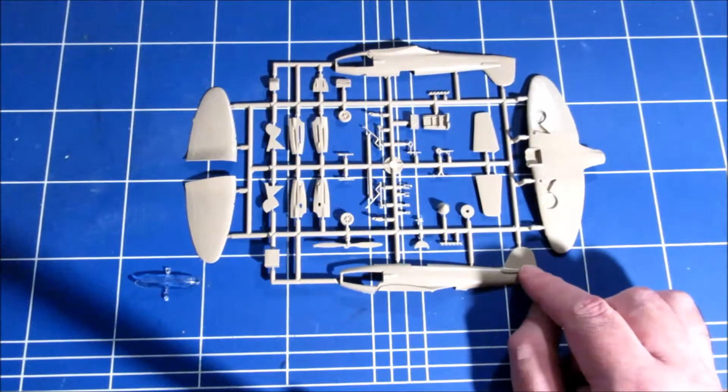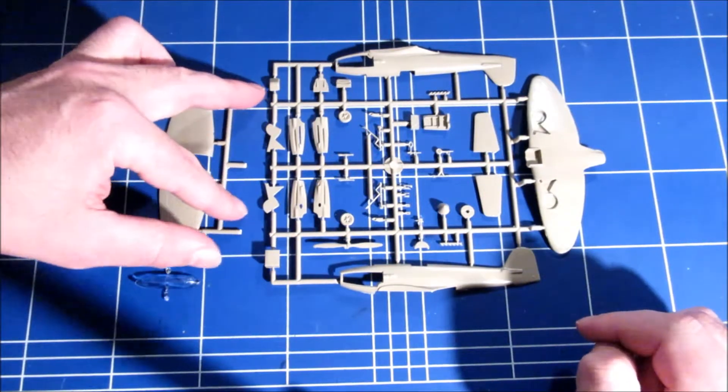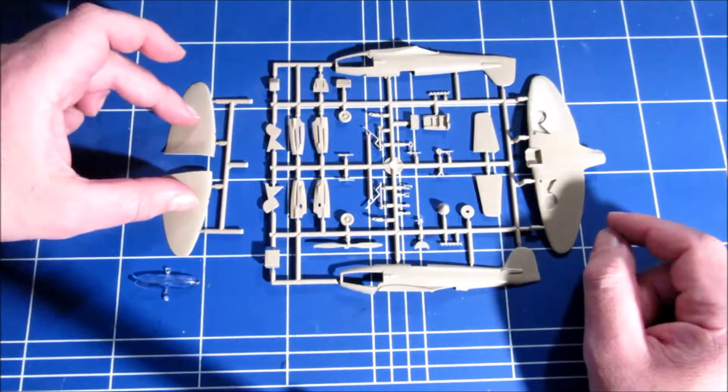Okay, there is basically one sprue, one main sprue. This part is broken off to fit inside the box, but it is just the upper wings.